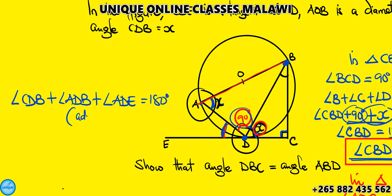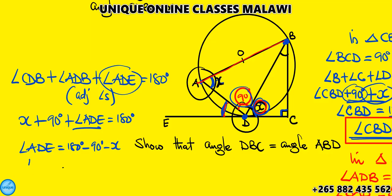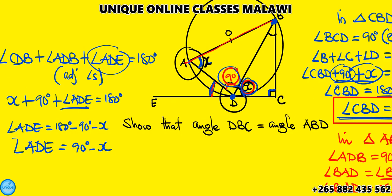These are adjacent angles on a straight line. So angle CDB which is x, plus angle ADB which is 90 degrees, plus angle ADE equals 180 degrees. Therefore, angle ADE equals 180 degrees minus 90 degrees minus x, which is 90 degrees minus x.